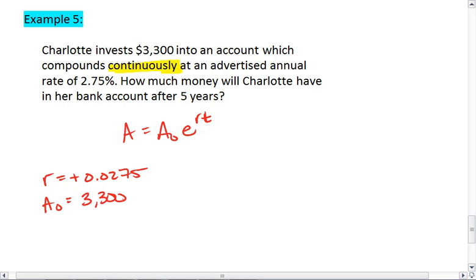We want to know how much money will Charlotte have in her bank account after 5 years. Because this r is 2.7% per year, that means t does in fact represent years. So here t is 5, and we're solving for A.